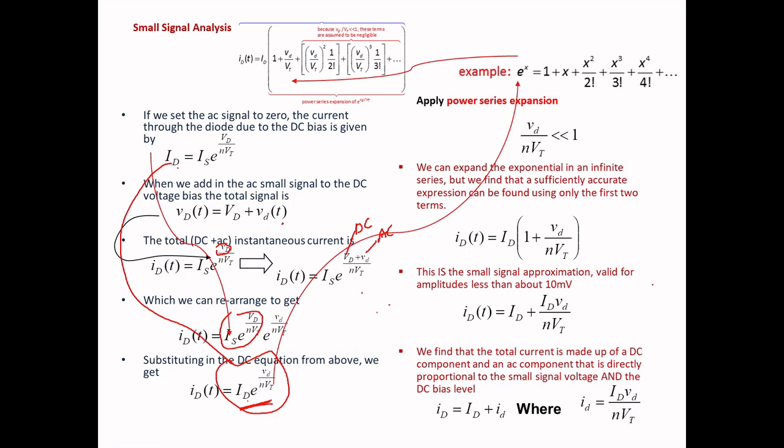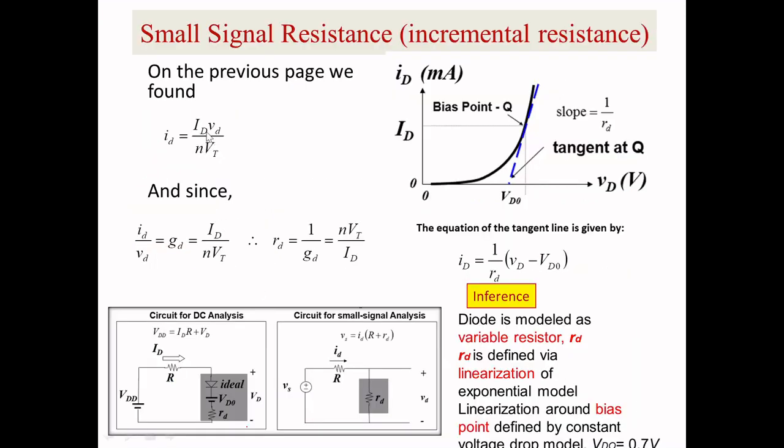I'm separating DC and AC in the next step. I'm bringing this equation in place of IS exponential VD by eta VT, replacing with ID. Now we go with the power series expansion. This is the basic formula for e to the x with power series expansion. I'll take only these two terms because the condition vd divided by VT is less than one. With that consideration, I write this equation from the power series expansion.